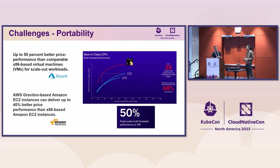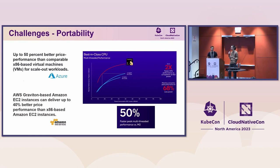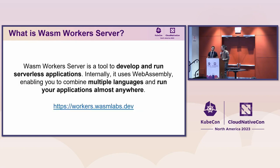Now we're going to talk about how we can tackle all these challenges using Wasm Worker Server. One of the things happening in the WebAssembly ecosystem is that there are different ways to deploy applications using WebAssembly as the underlying technology. Wasm Worker Server is the project we're using today for migrating the applications we described into WebAssembly.